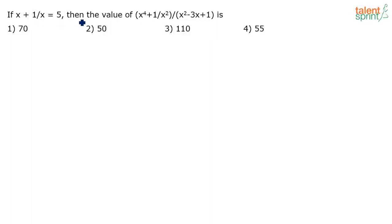If x plus 1 by x equals 5, then the value of x power 4 plus 1 by x squared divided by x squared minus 3x plus 1 is dash. Options are 70, 50, 110, or 55.